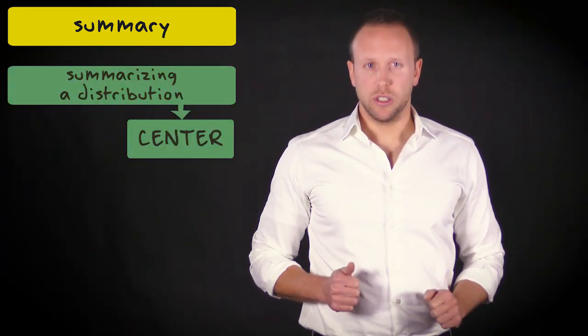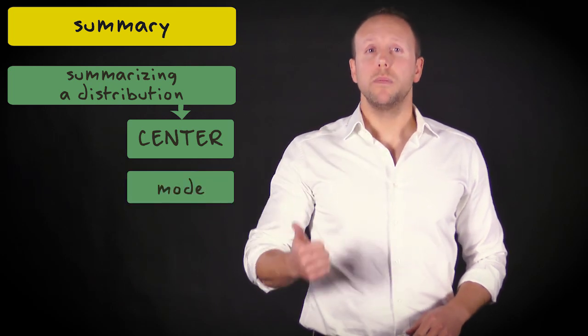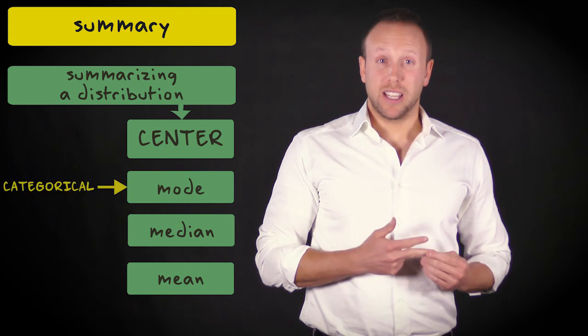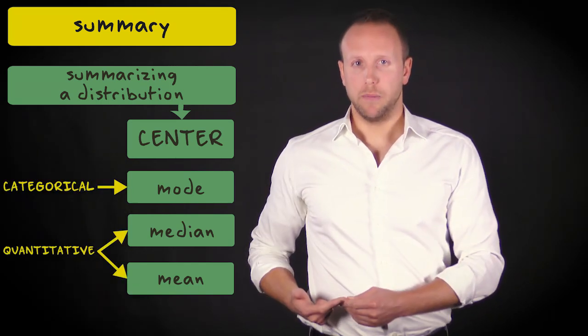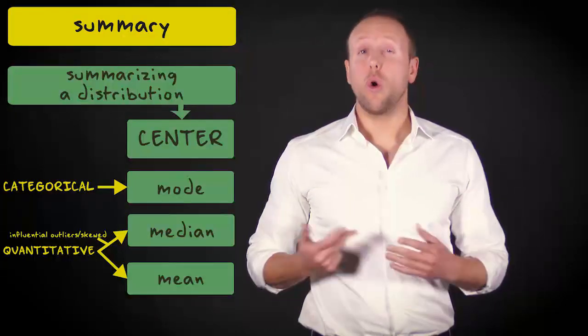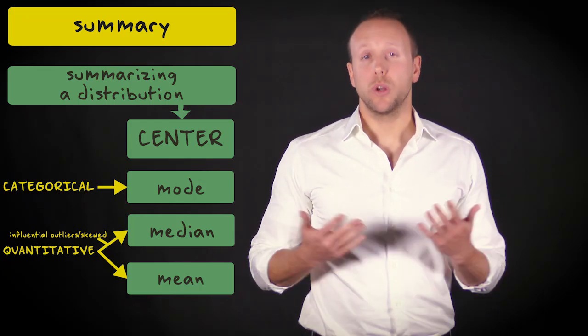Let me briefly summarize what you've learned in this video. To describe the center of a distribution, you can use three measures of central tendency: the mode, the median, and the mean. If your variable is categorical, you use the mode. And if it's quantitative, you employ the median or the mean. Go for the median if you have influential outliers, or if the distribution is highly skewed. And if that's not the case, go for the mean.